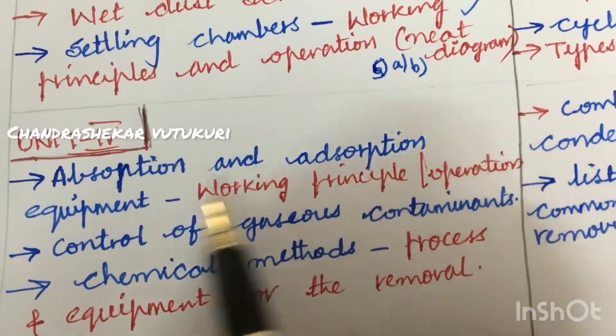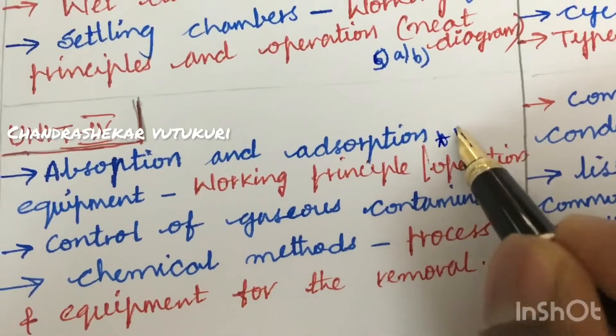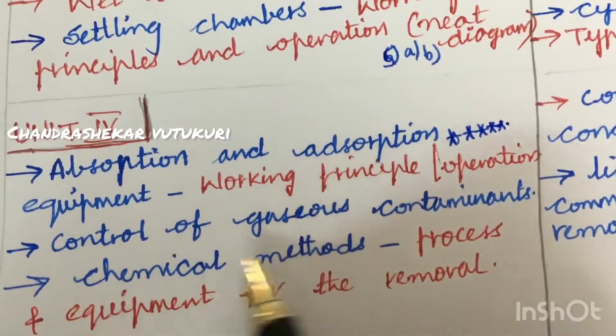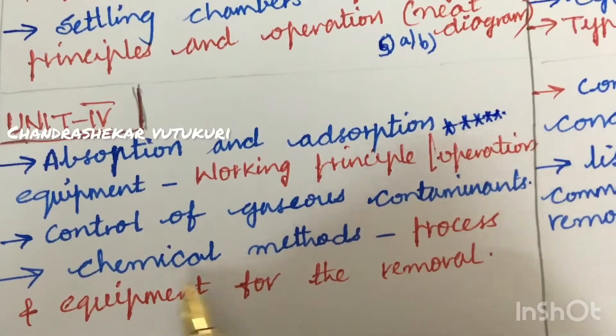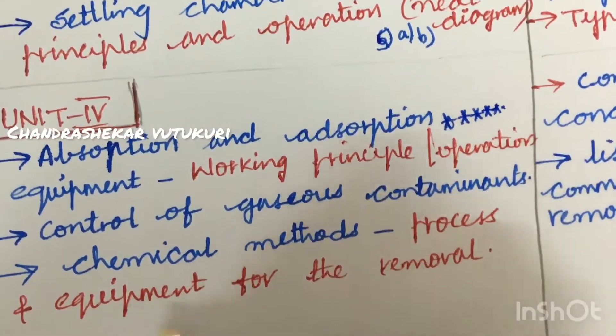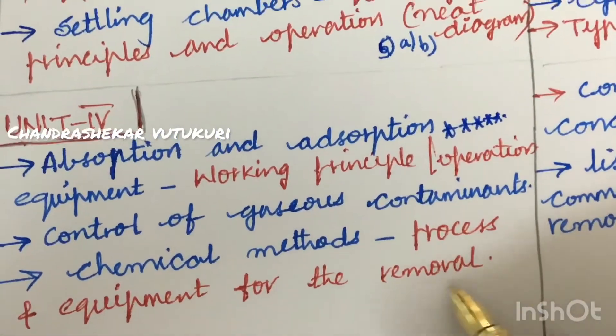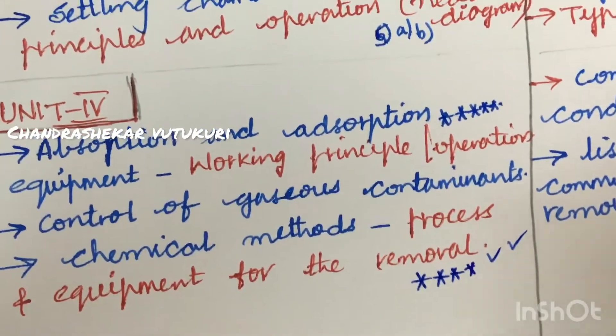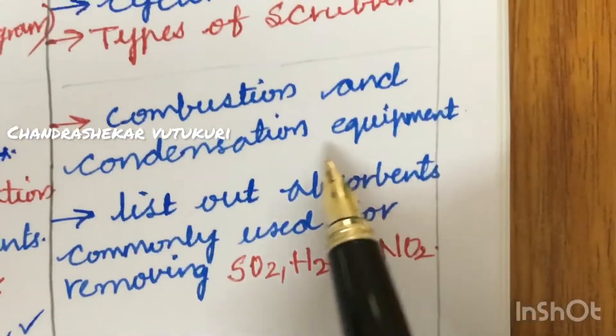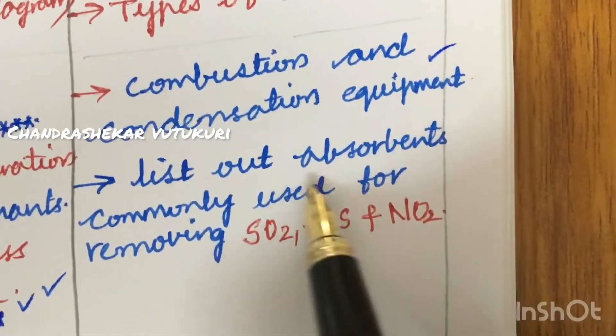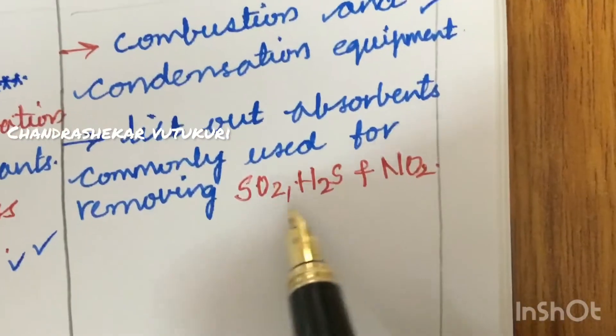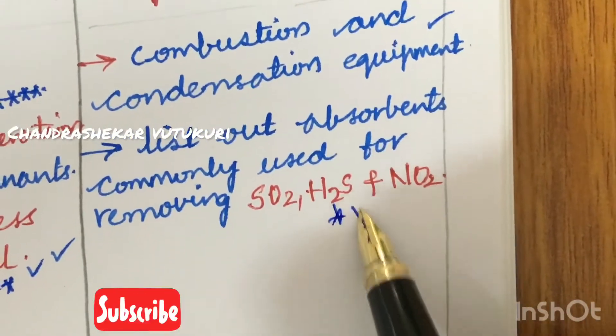Absorption and adsorption equipment is said to be very very important and gunshot question, which is asked repeatedly several number of times for a 15 mark. And the control of gaseous contaminants and the chemical methods process and equipment for the removal is said to be very important and we can expect this question this time in the question paper. Later, the combustion and congestion equipment as well as the list out the absorbents commonly used for removing SO2, H2S and NO2 is said to be also very important.